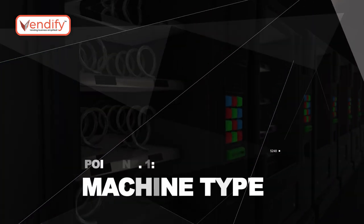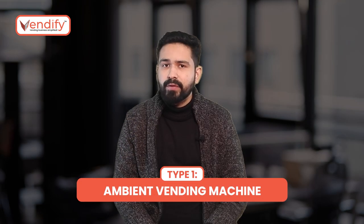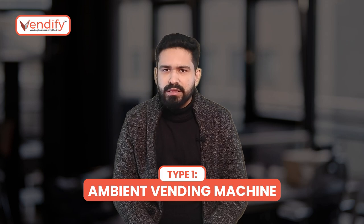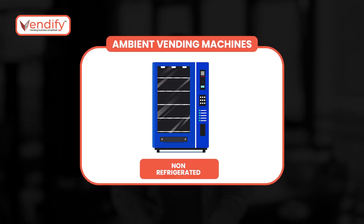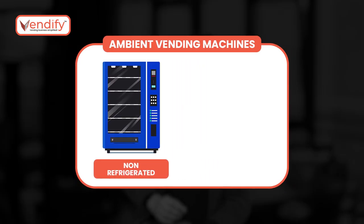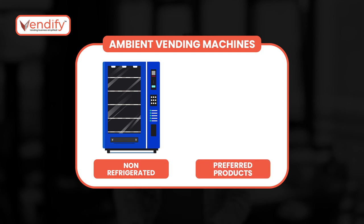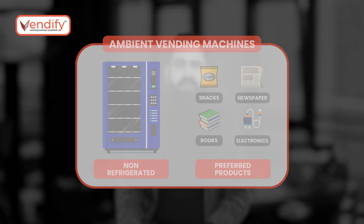Firstly, let's explain the different types of vending machines. First, we have the ambient vending machine. These machines aren't equipped with a refrigeration system. Therefore, you can only put products which are not perishable, like snacks, newspaper, books, and electronic items like chargers and power banks.